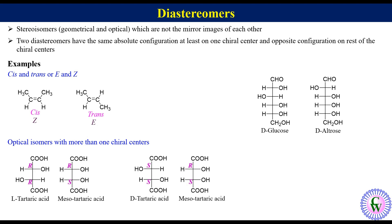It is clearly visible that D-glucose and D-altrose are optical isomers but not mirror images of each other. Comparing the absolute configurations, they have the same configurations at C4 and C5 while opposite configurations at C2 and C3, so they are diastereomers.